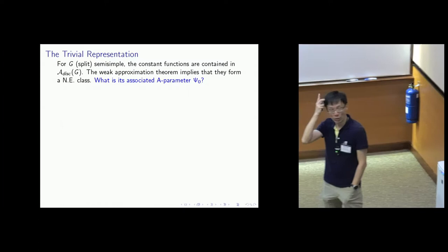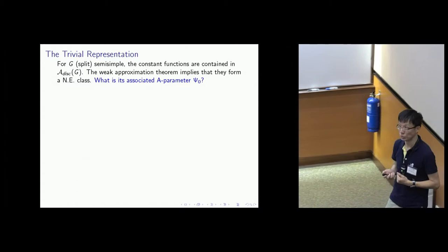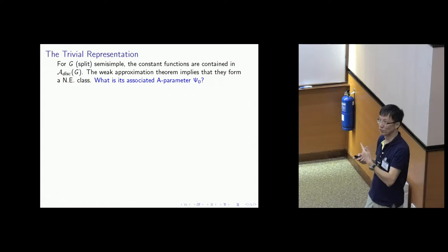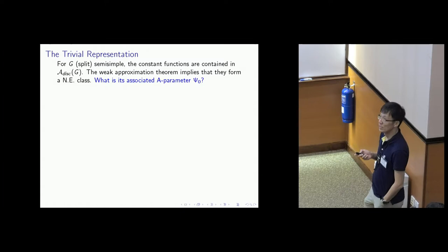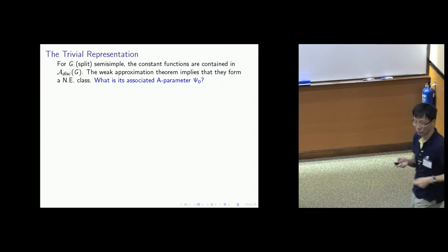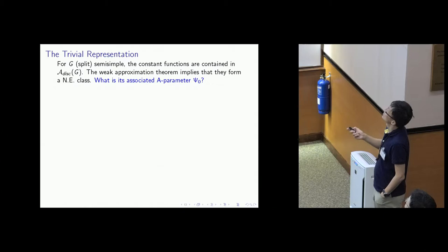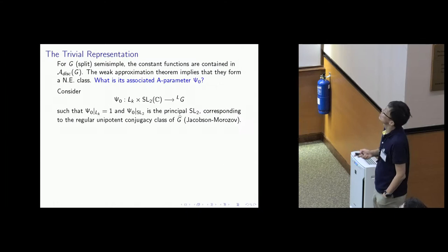The rest of the time, I want to discuss examples, because everything is just a fantasy at the moment in some sense. The first one to look at is the trivial representation. If G is semi-simple, what are these L^2 functions on GA mod GK? The simplest example you can give is constant functions, because GA mod GK has finite volume, so constant functions are L^2. They afford the trivial representation of GA. In fact, it is its own near equivalence class, because if you have some other constituent of the L^2 discrete spectrum that is almost everywhere trivial, then in fact it has to be trivial because of the weak approximation theorem.